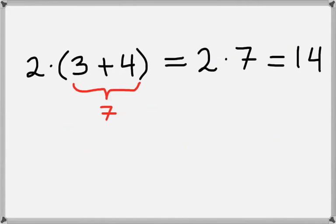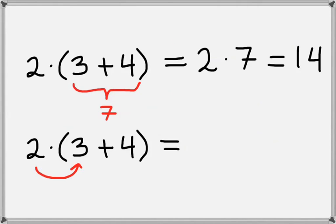But there's another way to do this. The other way is to distribute the 2. What I mean by that is first we can take 2 times 3, that gives us 6, and then we can take 2 times 4, which is 8, and add that to the 6. So then we just have 6 plus 8, which is again 14.